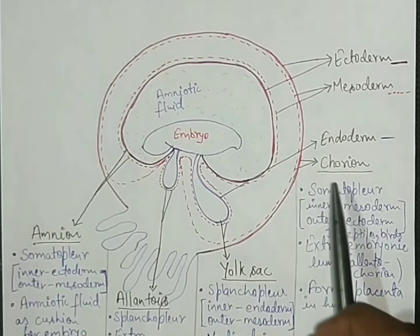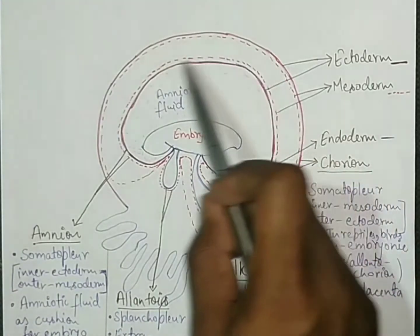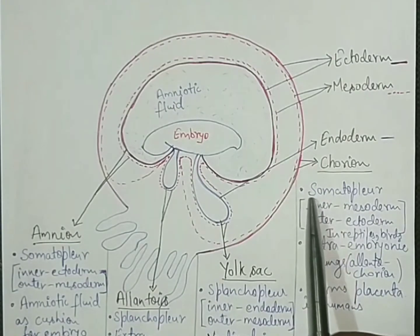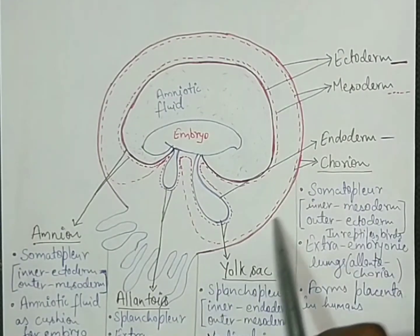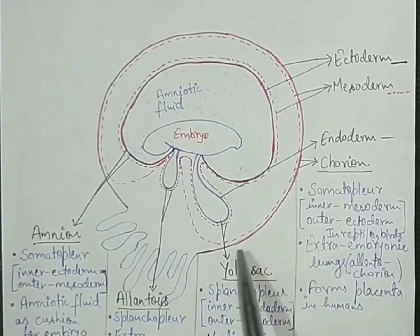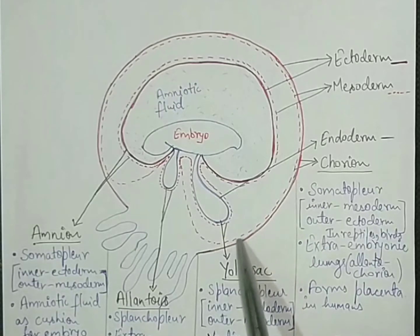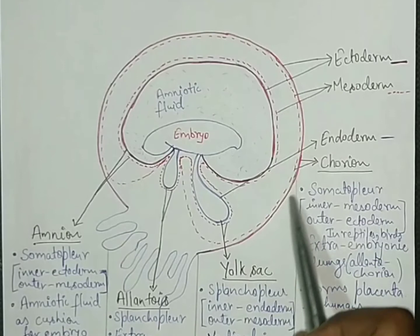The very first extra embryonic membrane is chorion, and it surrounds the whole embryo. It is present in the fold of somatopleur. As you can see here, this is chorion and this is the fold of somatopleur. It means the inner layer is of mesoderm, shown by the dotted red line, and the outer layer is of ectoderm.